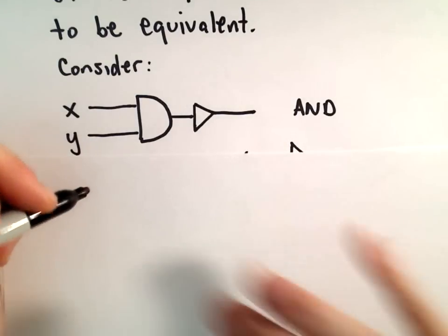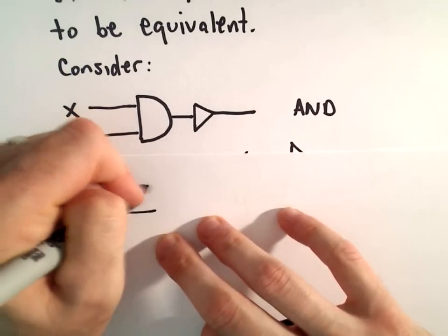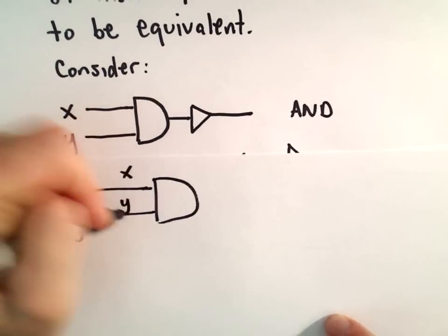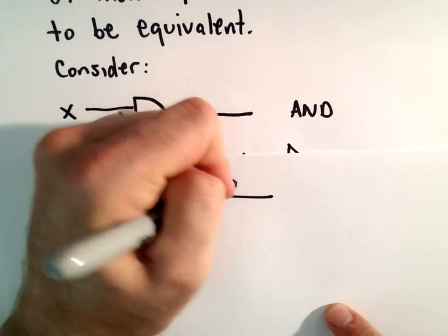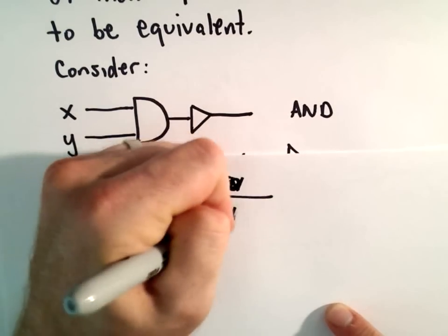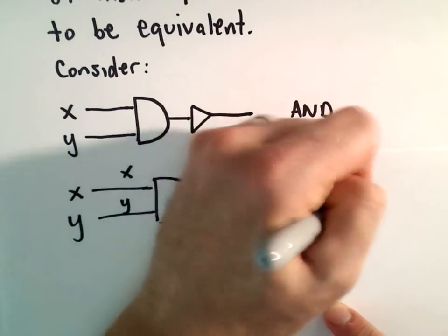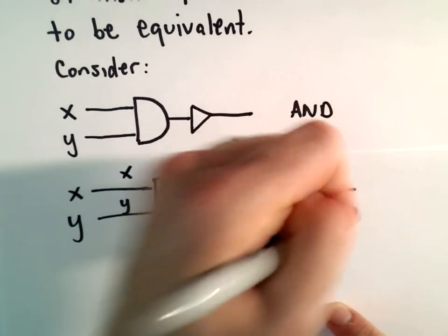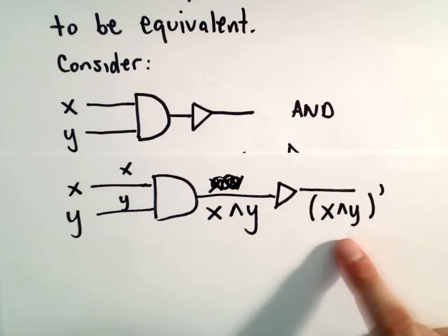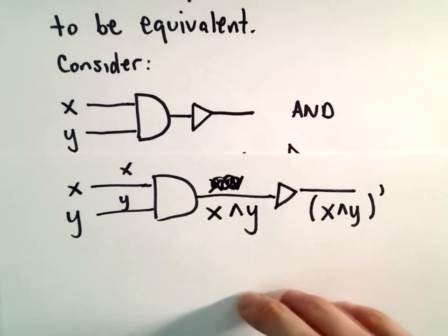If we make our Boolean expressions, for our first one here we've got x and y. The output is going to be x and y, and then our NOT gate. So we'll take x and y and take the complement or the NOT of that statement. So that's going to be the Boolean expression (x∧y)' for our first circuit.